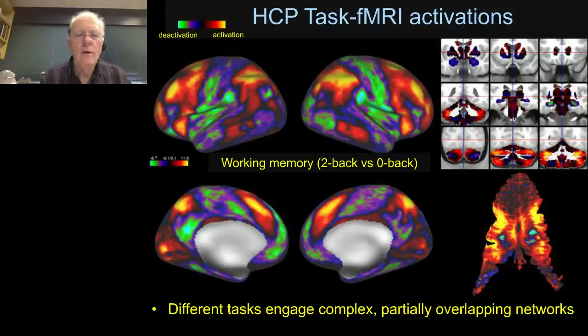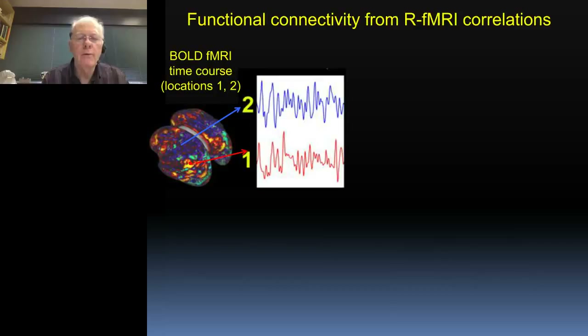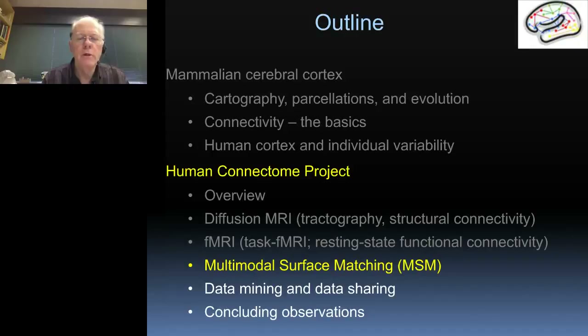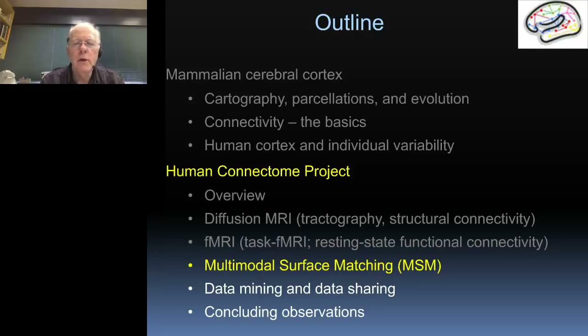One issue we have to face is that comparisons across individuals is extremely challenging owing to individual variability in cortical folding. Conventional methods of aligning cortical areas across many different subjects produce a certain level of alignment, but an exciting new method known as multimodal surface matching, or MSM, developed by our colleagues at Harvard, greatly elevates our ability to compare alignment across subjects.